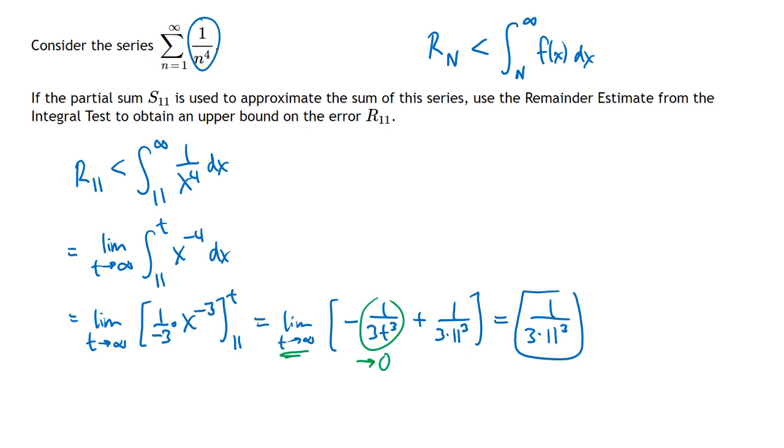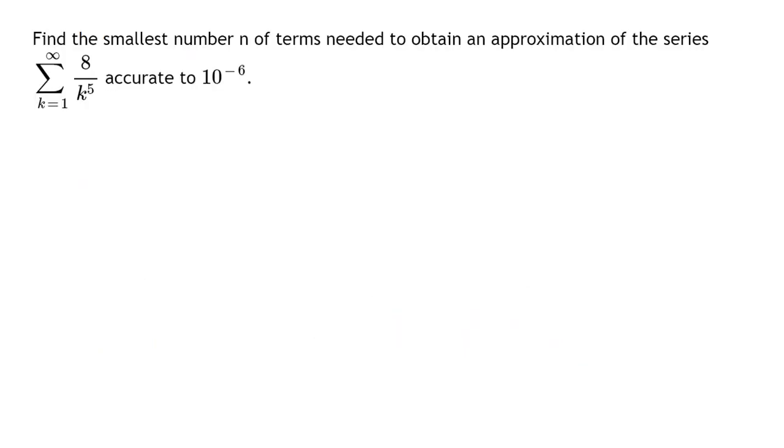So if they tell you how many terms you want to add, you can use that for your value of capital N and use that to get your error bound. Now something else that we can do is we can give a desired amount of error and ask how many terms do we need to add? What should capital N be in order to achieve that error bound?